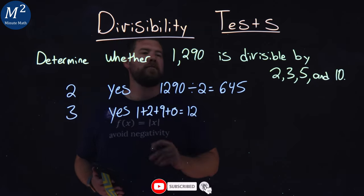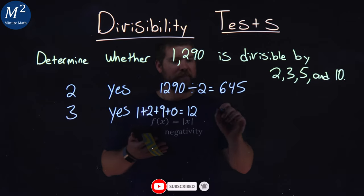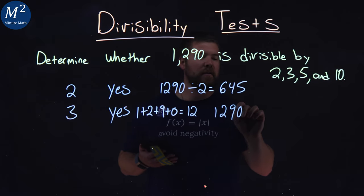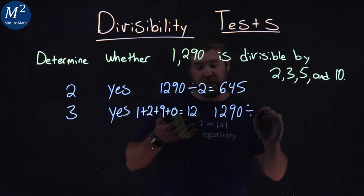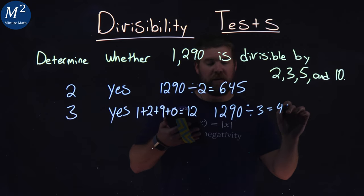So yes, 1,290 is divisible by 3, and that comes out to be, my cheat sheet here, 430.